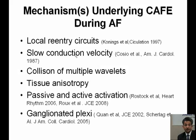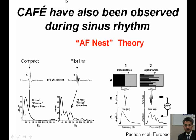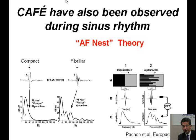Fractionated electrograms have also been observed in the atria during sinus rhythm. All of us are familiar with this in certain areas — for example, the cavo-tricuspid isthmus region, the coronary sinus ostium, and the region of the slow path. These locations frequently have signals with multiple components even during sinus rhythm. The first to look at them carefully in the context of AF was Dr. Pachon from Brazil.